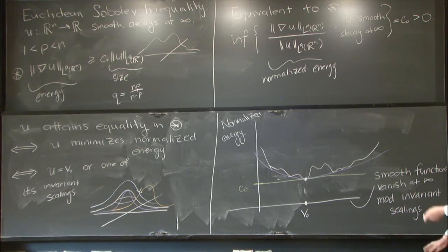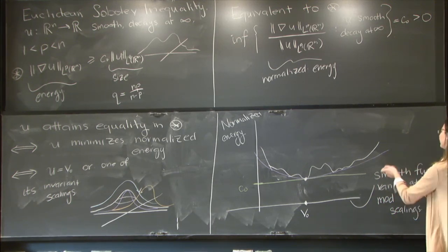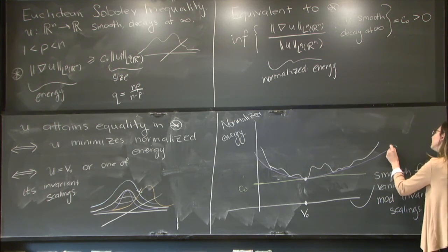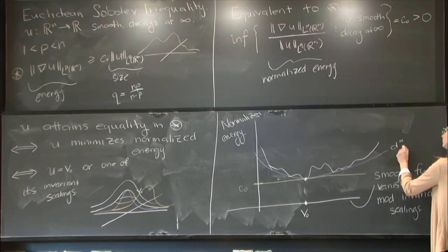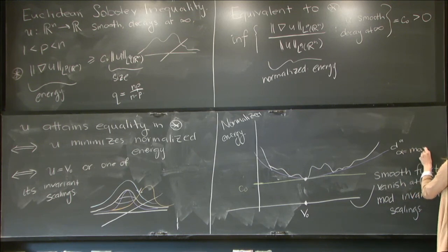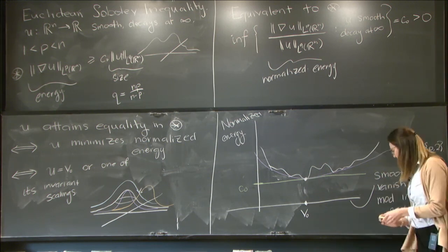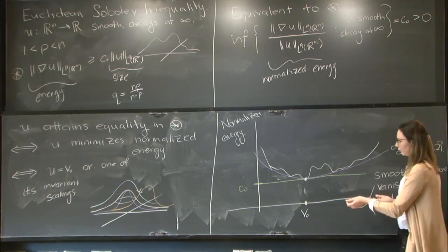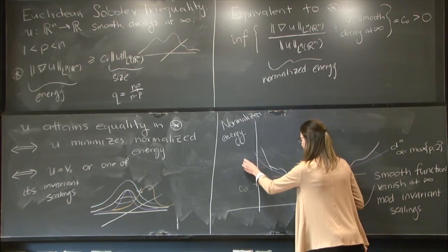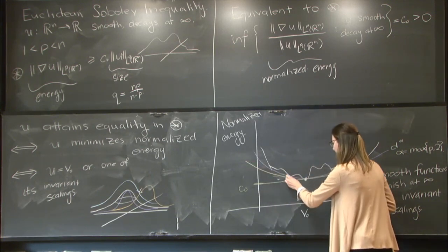And so there's a conjectured way that this should separate, which is like the distance to the alpha, which is where alpha is the maximum between p and 2. So this conjectured bound is known in the case p equals 2, and otherwise it's not.